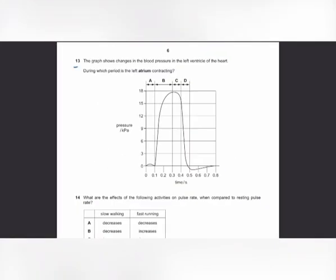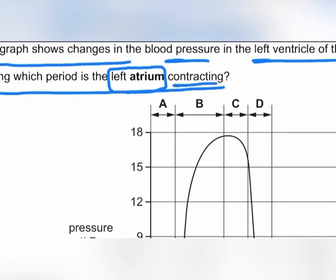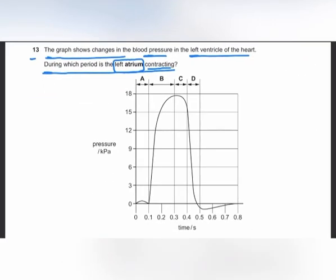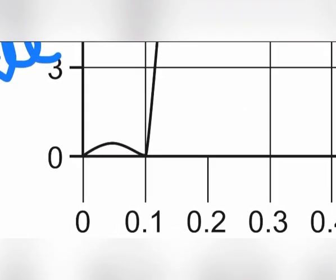MCQ number 13: the graph shows changes in blood pressure in the left ventricle. When the left atrium contracts, blood is squeezed into the left ventricle, causing a mild increase in left ventricular pressure. This corresponds to phase A on the graph.